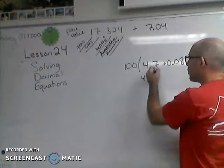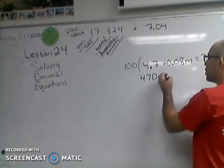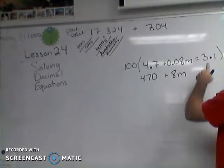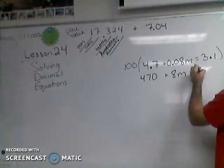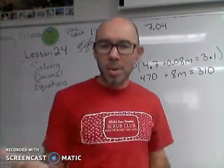So if I multiply 4.7 by 100, you will get 470. If I multiply 0.08 by 100, I will get 8. And if I multiply 3.1 by 100, I will get 310.